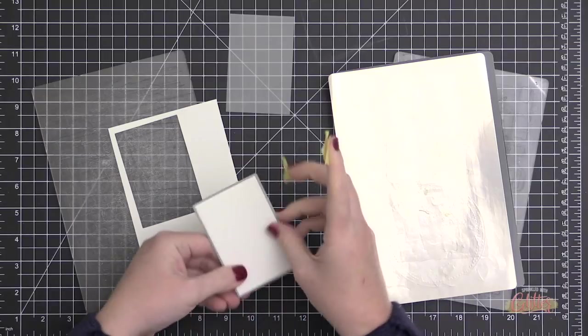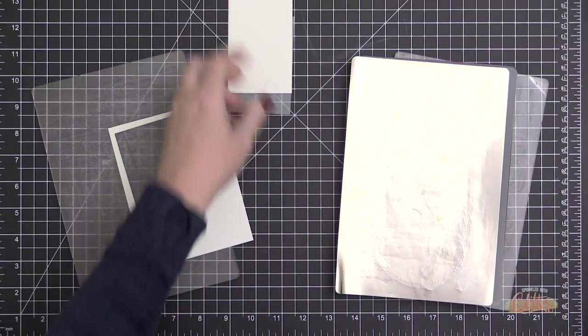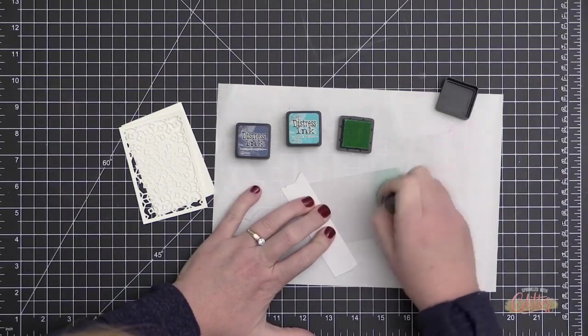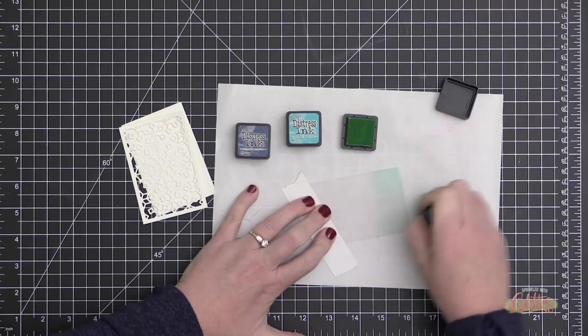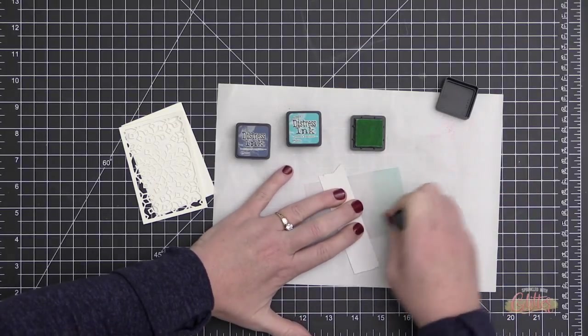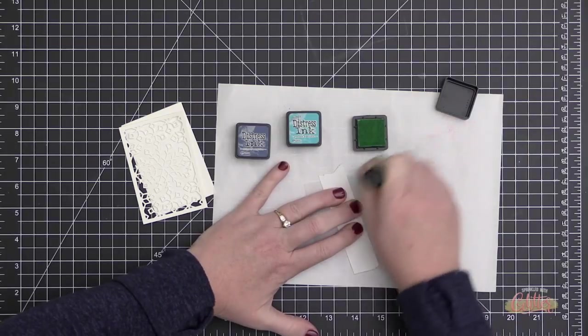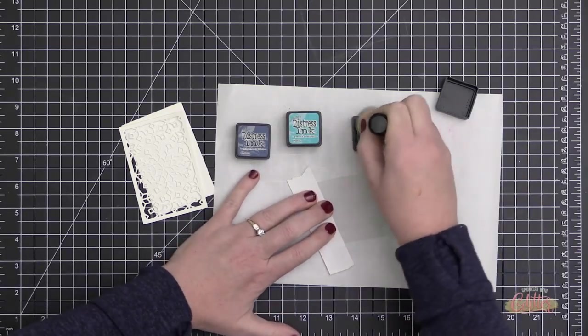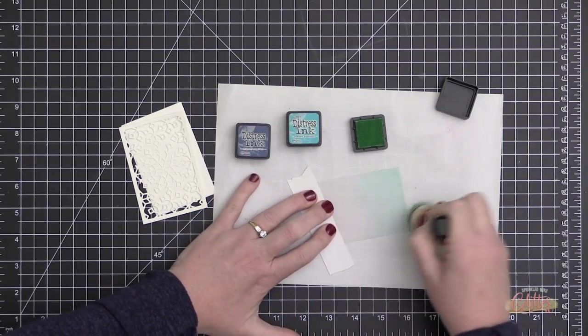Then I'm going to take the vellum and place it onto my Tonic Easy Clean mat, and I'm going to do a little ink blending on top of this vellum. Yes, you can put dye inks on top of vellum—you just have to give them a lot more time to dry or you have to heat set them.